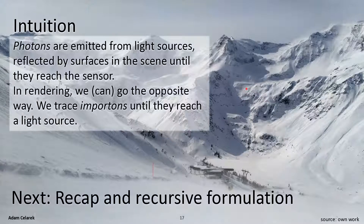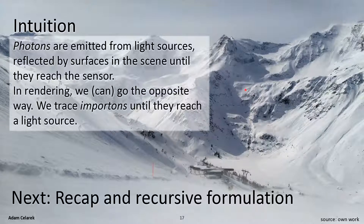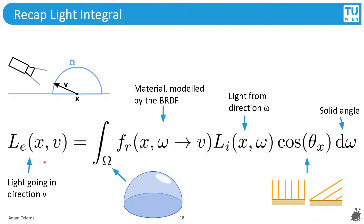To recap: photons are emitted from light sources and reflected by surfaces until they reach a sensor. In rendering, we can trace importance until it reaches a light source. As a recap from the light lecture: we compute the light going into direction v by integrating over the hemisphere, looking for light coming from direction omega, multiplied by the BRDF factors from the material, weighted by the cosine of the incoming angle, over the solid angle.